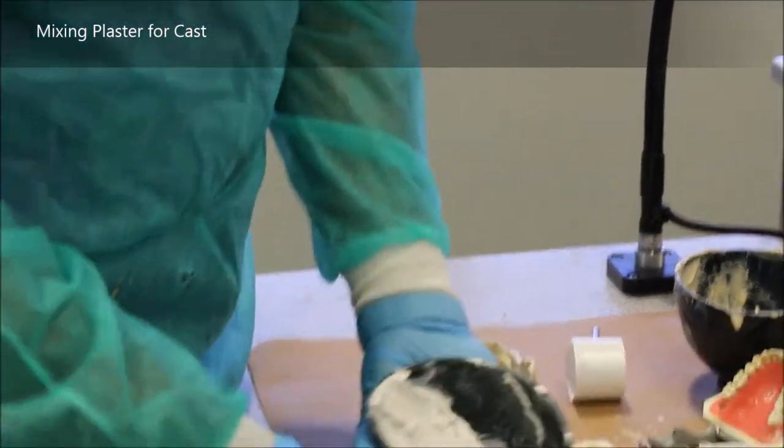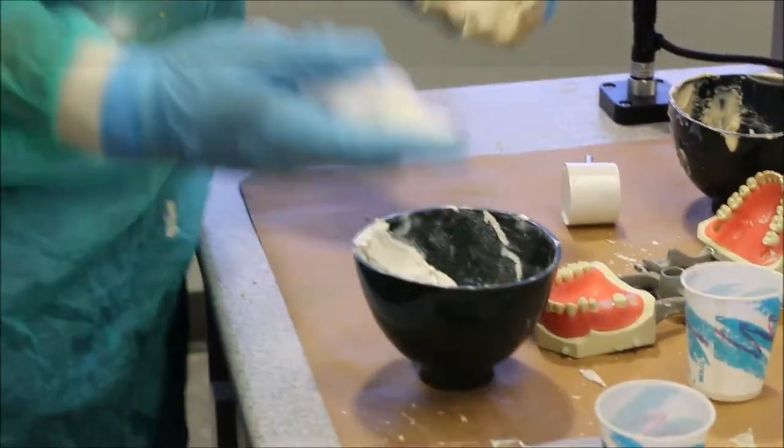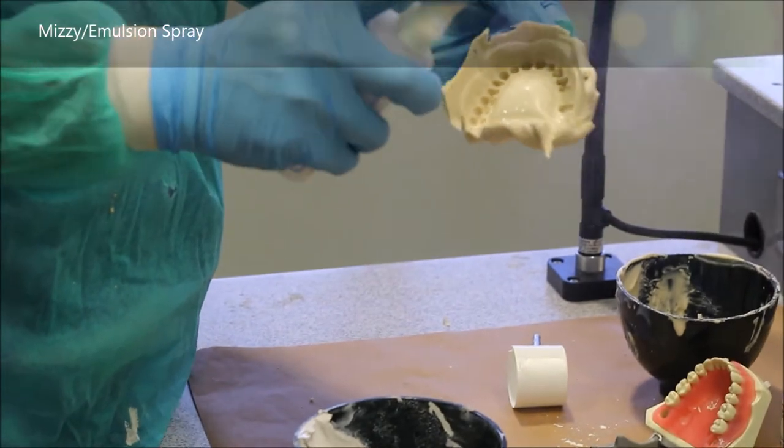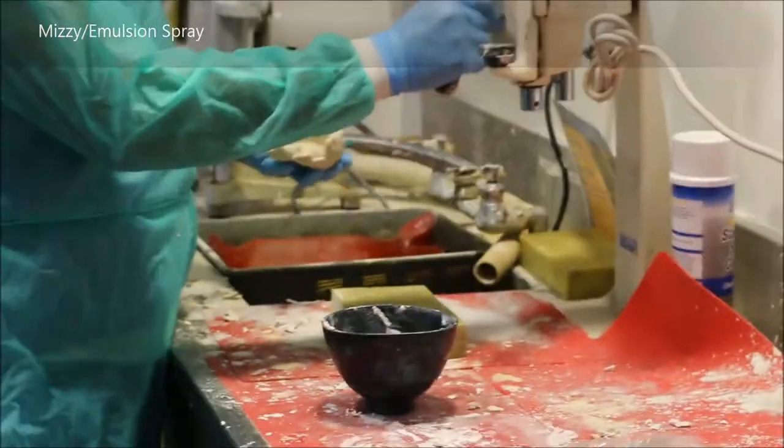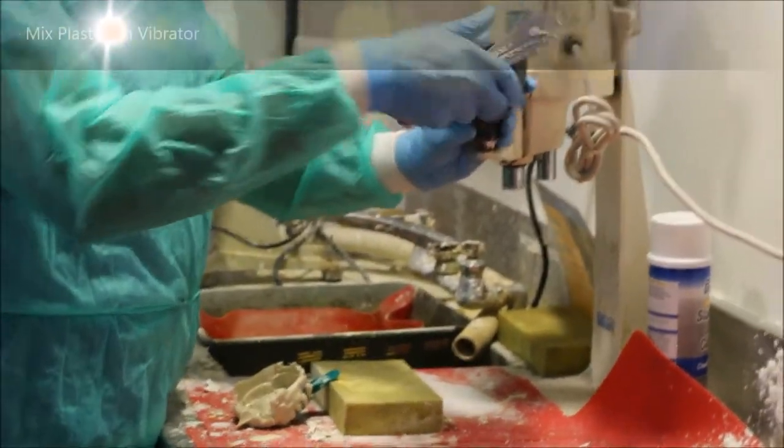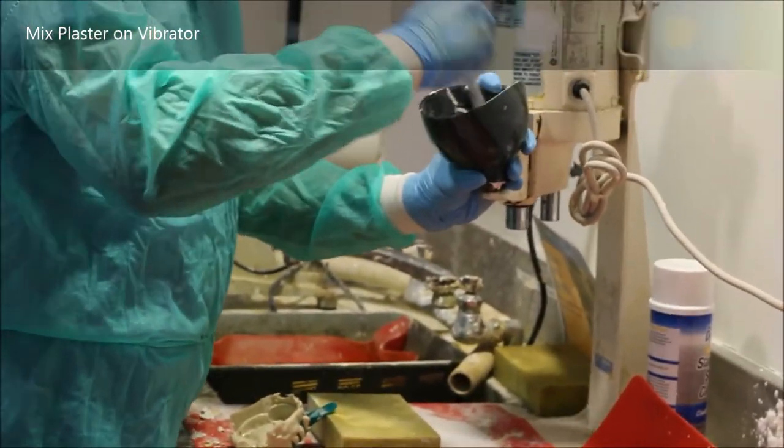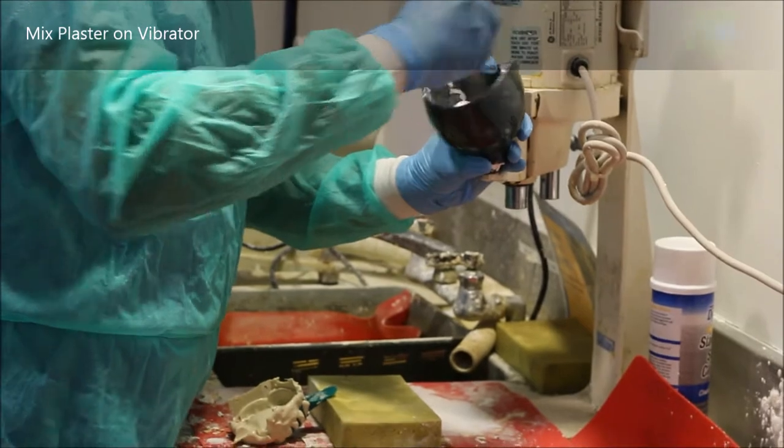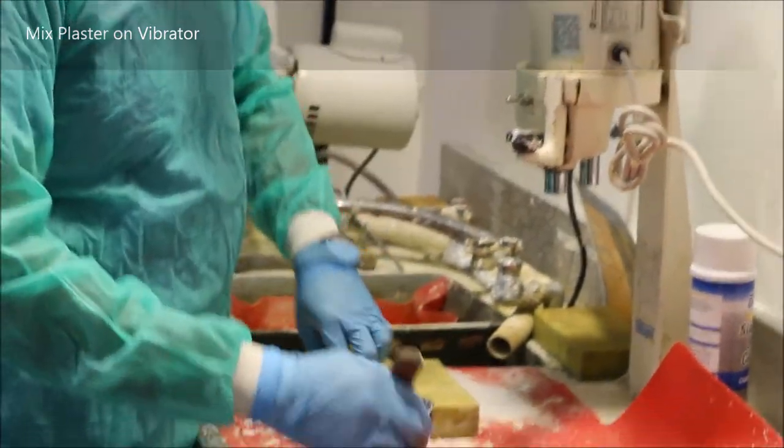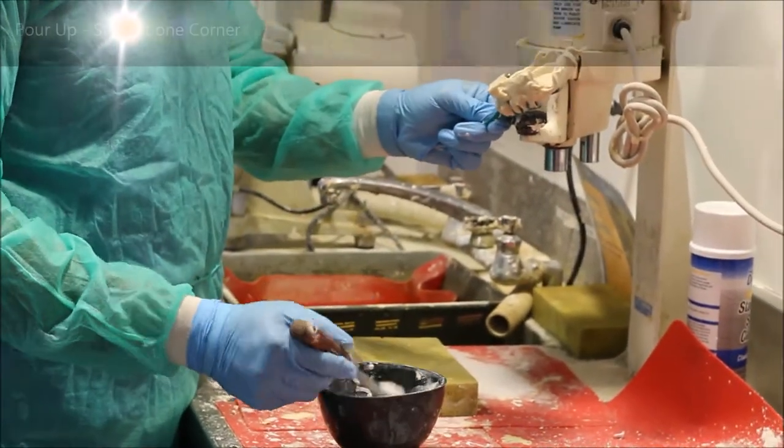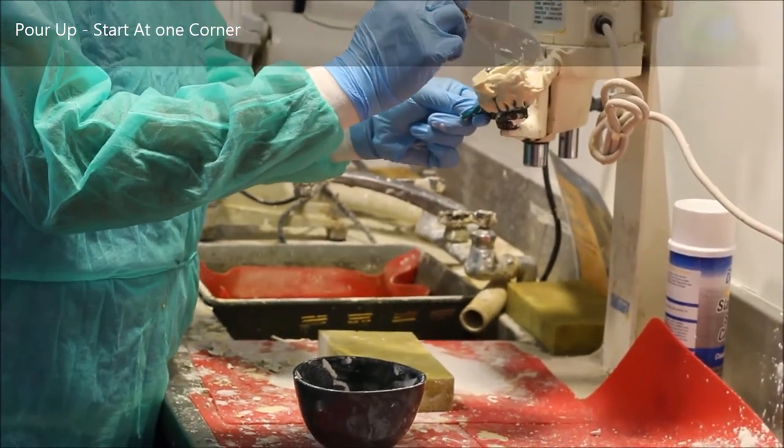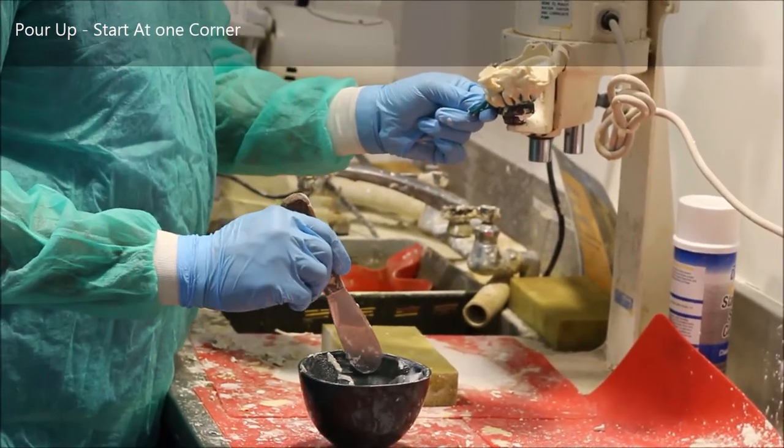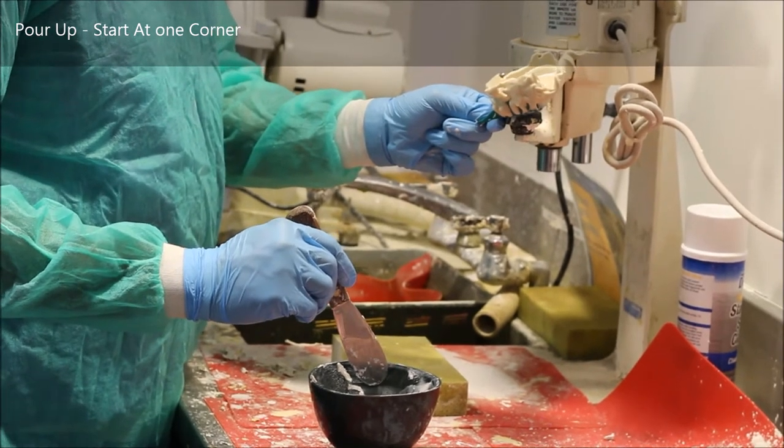At this point you'll take your impression and spray some emulsion spray—this is the Mizzy spray or the silicone Mizzy spray as it's labeled. Now you're going to start the actual pour up. Before doing anything, find a machine that has a vibrator like the vacuum mix machines here or the vibrators anywhere, and you want to mix the plaster there before you start pouring up your cast.